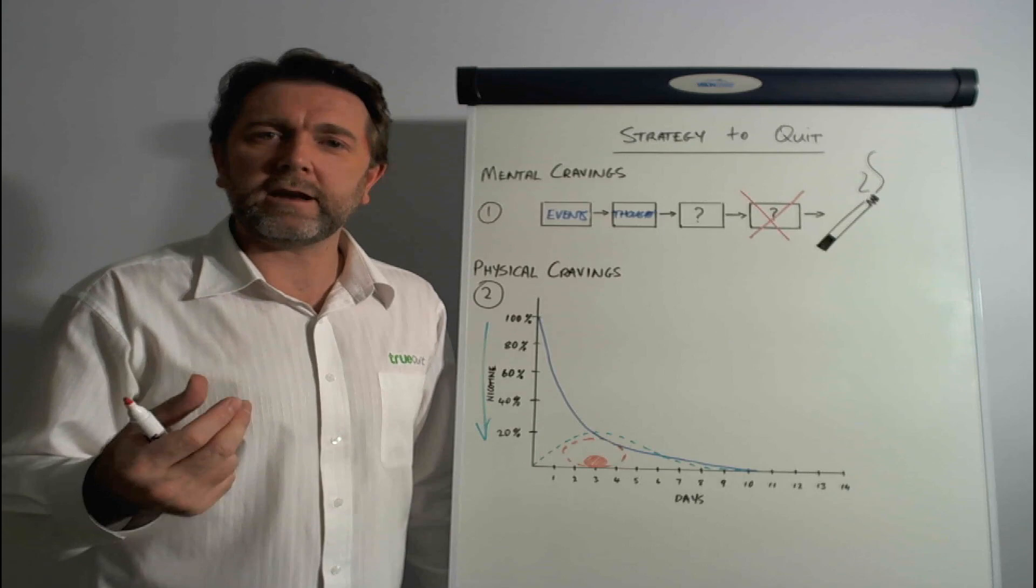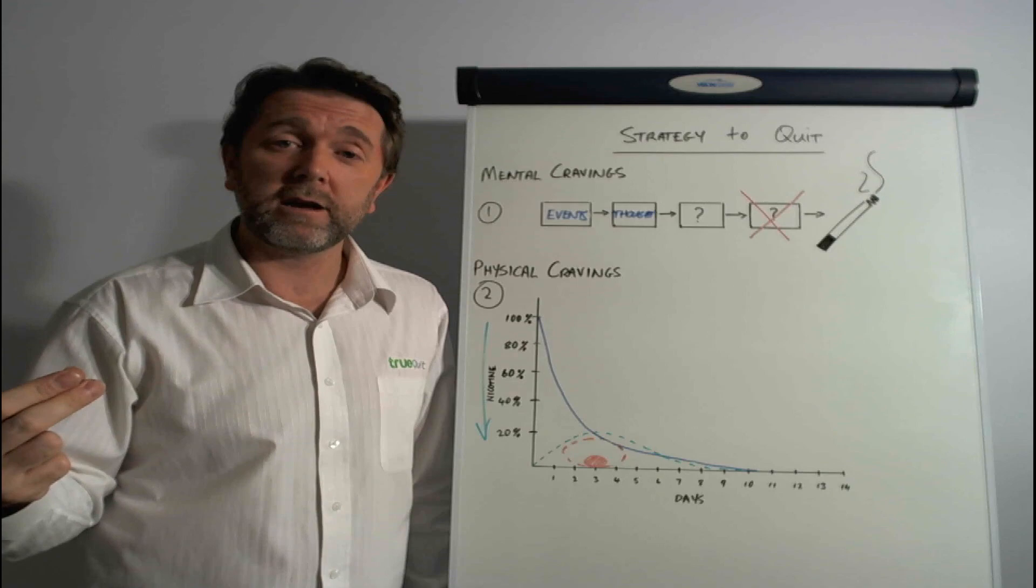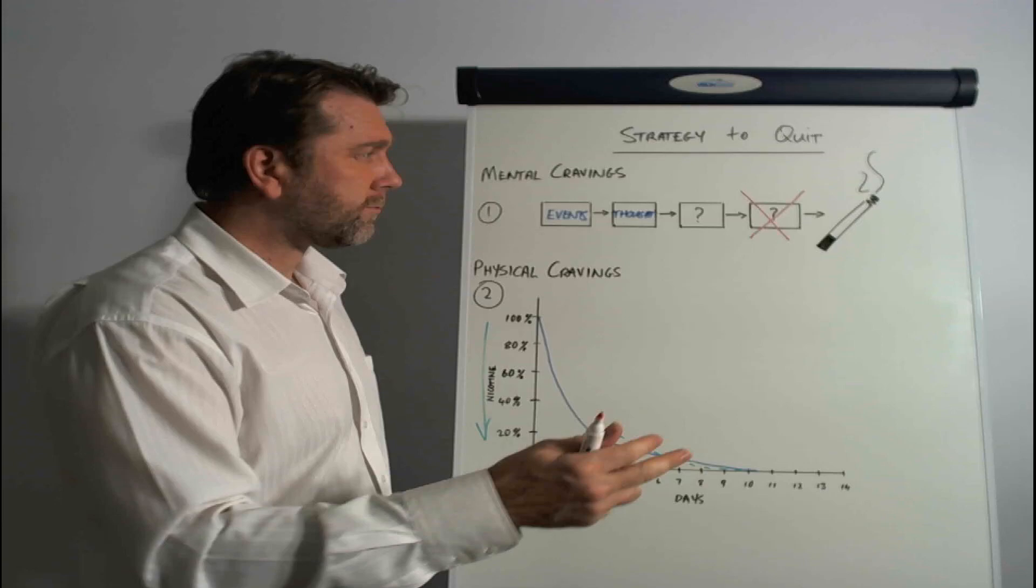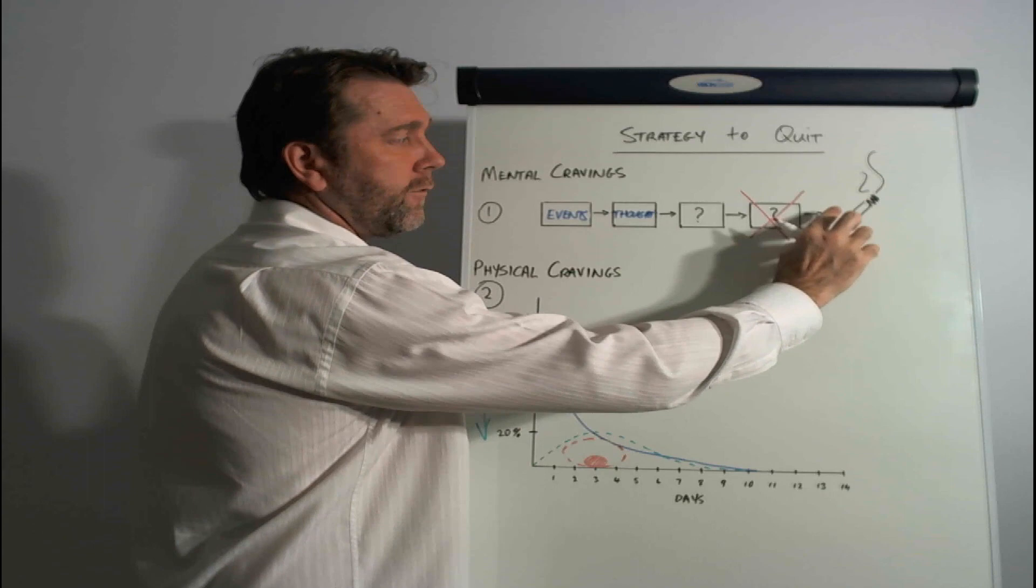They just can't believe that it is that simple. But it's because that there's something that's been disabled on the mental side of the addiction that needs to be fixed, needs to be corrected. So, when you take out this stage here, then it doesn't progress forward to smoking.